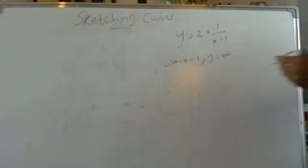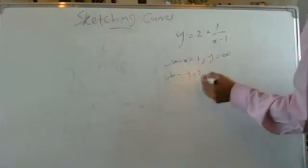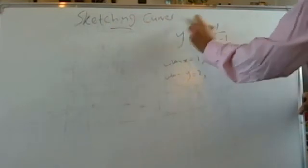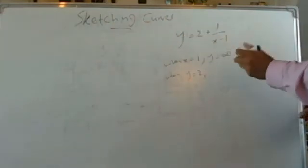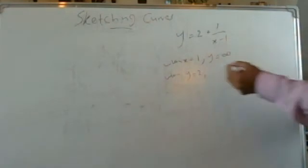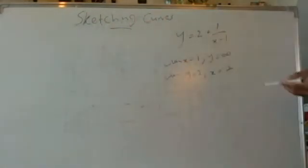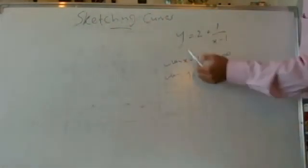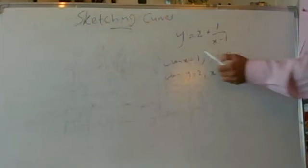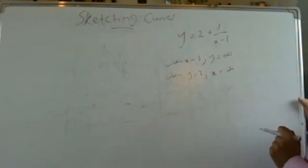There's another asymptote in the other direction. When y equals 2, we get 2 minus 2 equals 0, so 1 over (x minus 1) equals 0 — there's no way to get 0 by dividing 1 by something, so x equals infinity. That means y equals 2 is your second asymptote. Try substituting y equals 2 and you won't be able to solve it.